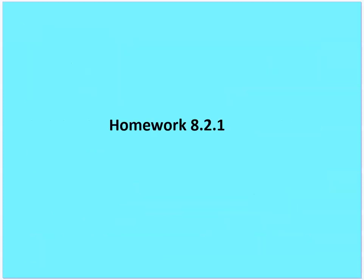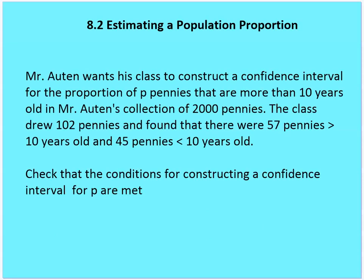This brings us to homework problem 8.2.1 — we're just going to check conditions. Mr. Otten wants his class to construct a confidence interval for the proportion of pennies that are more than 10 years old. In his collection of 2,000 pennies, the class draws 102 pennies and found that 57 were greater than 10 years and 45 were less than or equal to 10 years. Check that the conditions for constructing a confidence interval for P are met.